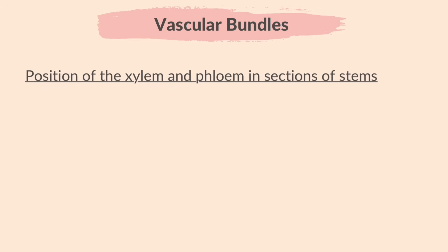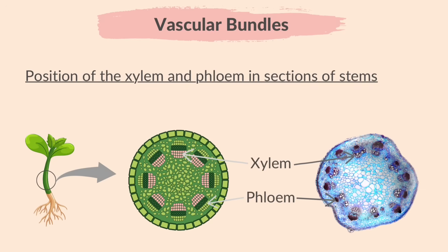Next, let's learn the position of xylem and phloem in sections of stems. In this diagram, the inner pink areas are the xylem tissue, and the outer green part of the oval shapes are the phloem tissues. On the right, you can see a real image of the cross-section of a stem.